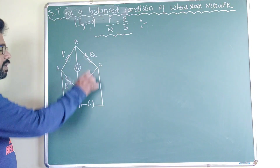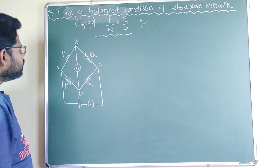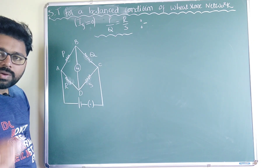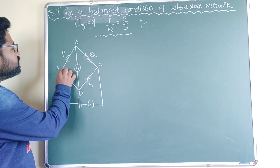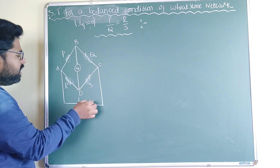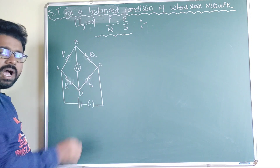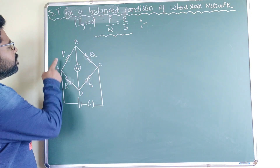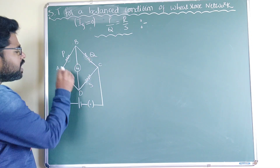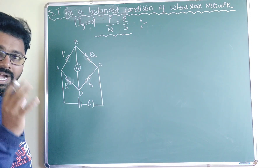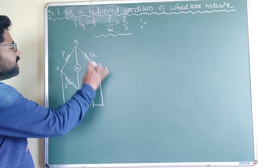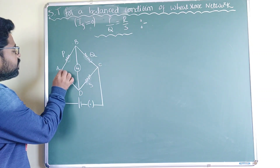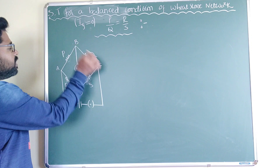This is the diagram. A, B, C, D is a quadrilateral, and AB, BC, CD, and AD are the four arms of the quadrilateral. P, Q, R, S are the four resistors connected across each arm of the quadrilateral, marked with the letters A, B, C, D.